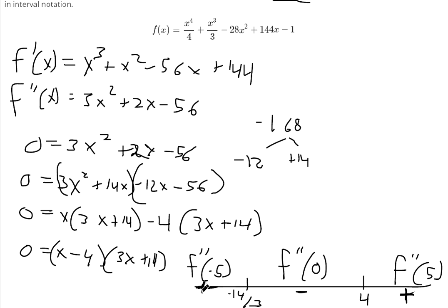It's concave up everywhere where the second derivative is positive. So from negative infinity to negative 14 over 3, we are concave up. From 4 to infinity, we are concave up.